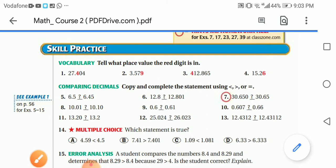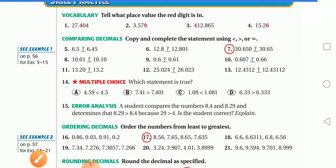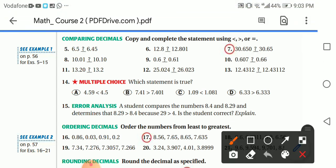Let's continue with comparing: 6.5 or 6.45 — which is greater? Comparing as we've practiced: 6.50 vs. 6.45 — the tenths digits are 5 vs. 4, so 6.5 is greater than 6.45.